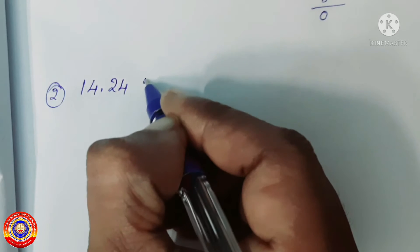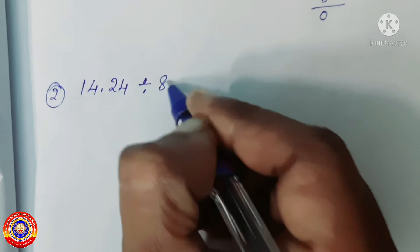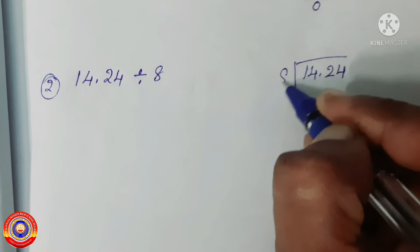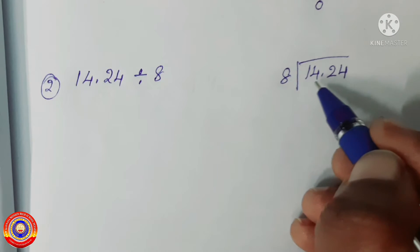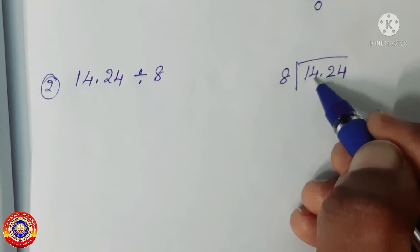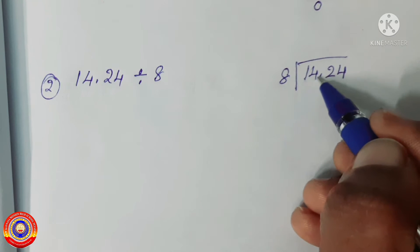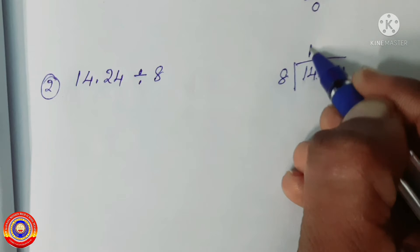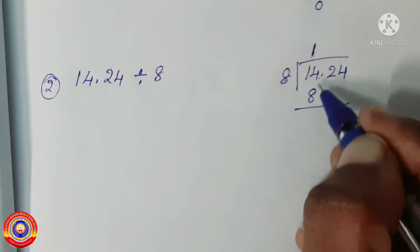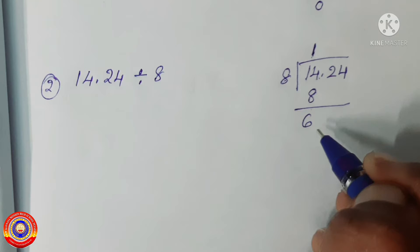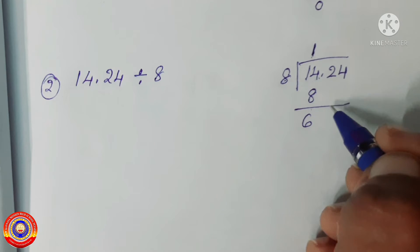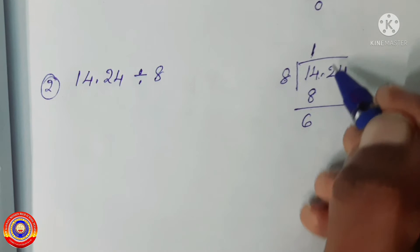Next question: 14.24 divided by 8. We have to divide the numbers one by one. We can't divide 1 by 8, so take the next number also — 1 will become 14. Now divide 14 by 8: yes, it is 1 time. 1 into 8 is equal to 8, and 14 minus 8 is equal to 6.